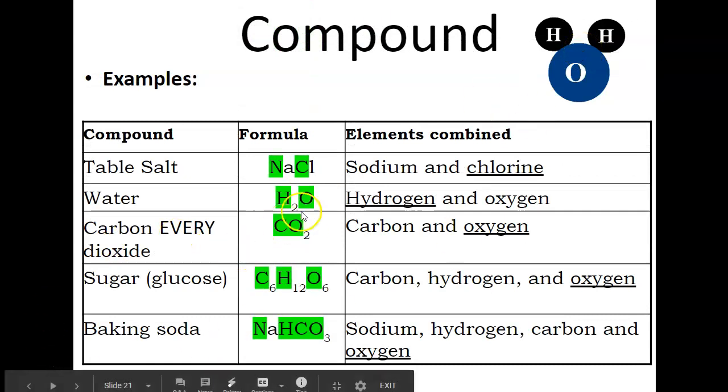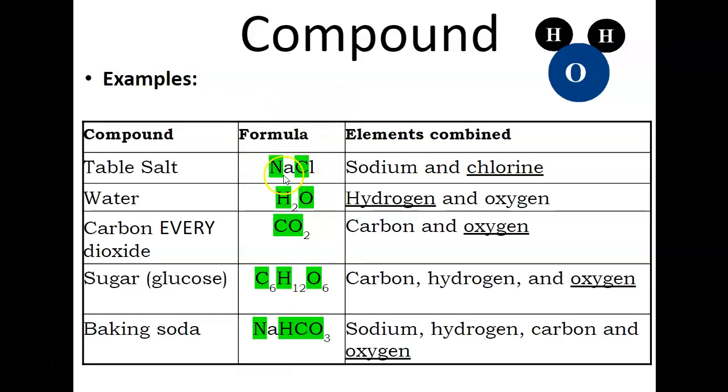Here's some other things. We have water, carbon dioxide, sugar, baking soda. They all form these chemical compounds. Remember that if you're looking at a compound, it's going to have one or it's going to have two or more elements. So, every time you see a new element, you're going to see a capital letter.